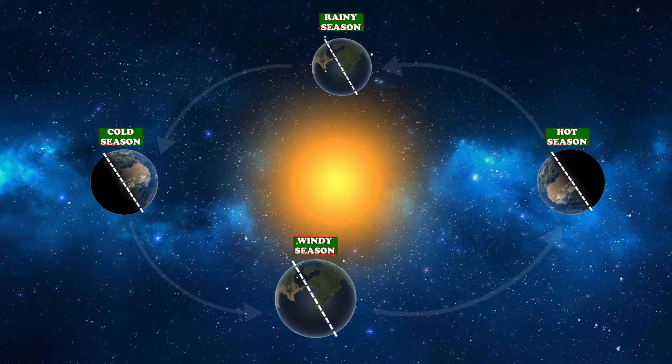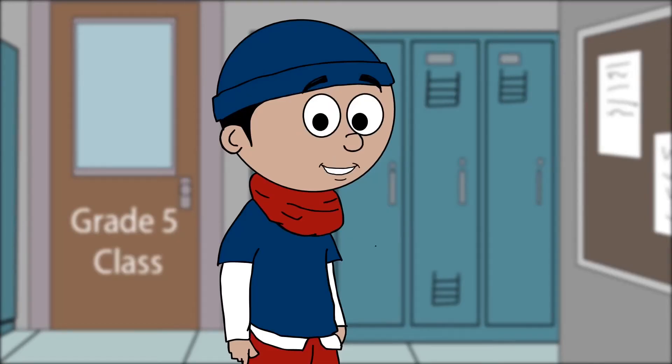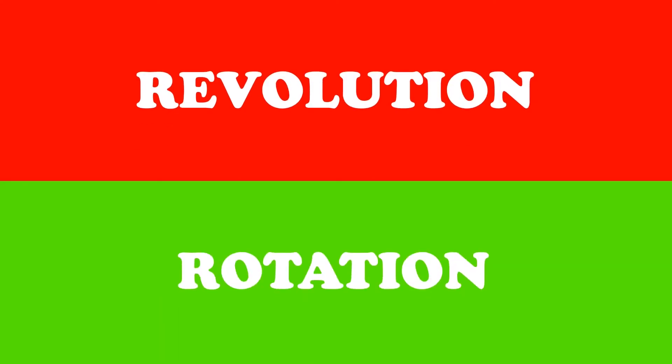In between, it's the rainy season and the windy season. If the Earth wasn't tilted, we would have the same season all year long. Revolution, rotation, orbit.